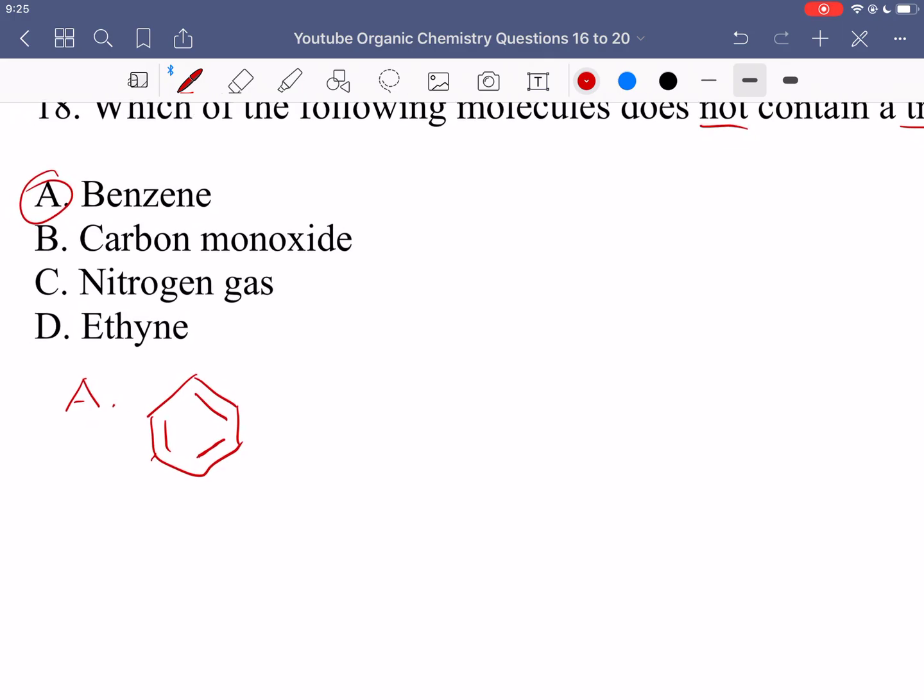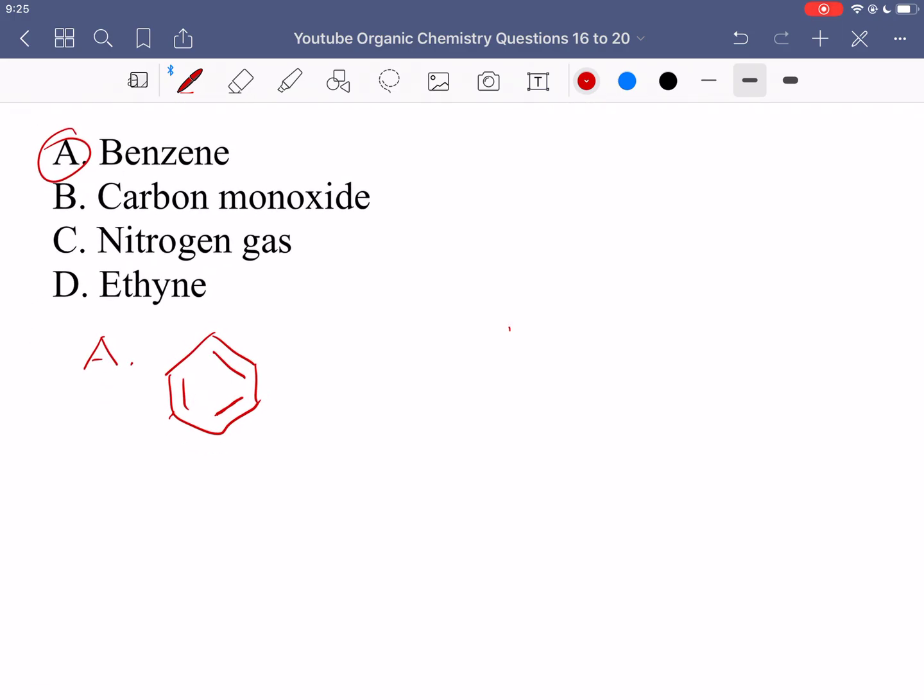And let's just go through the other options. So carbon monoxide is one carbon and one oxygen. And there is a triple bond between them. So that's what carbon monoxide looks like.